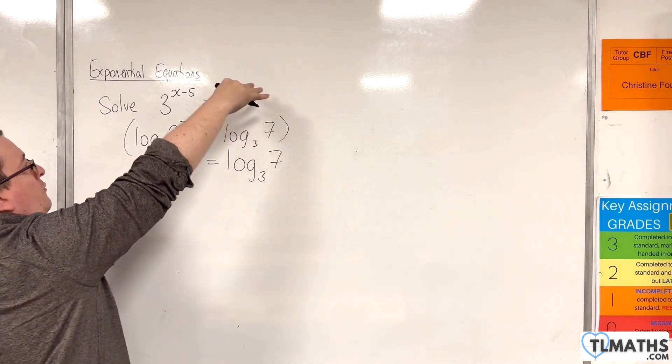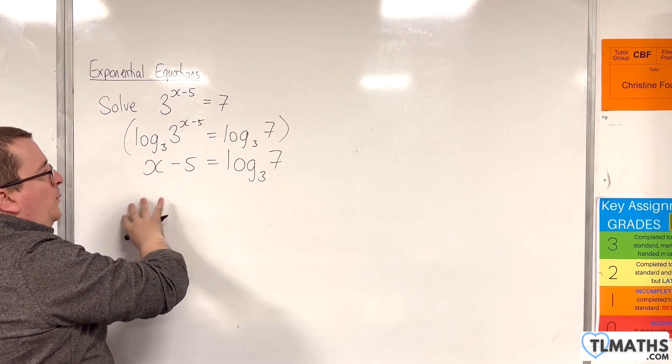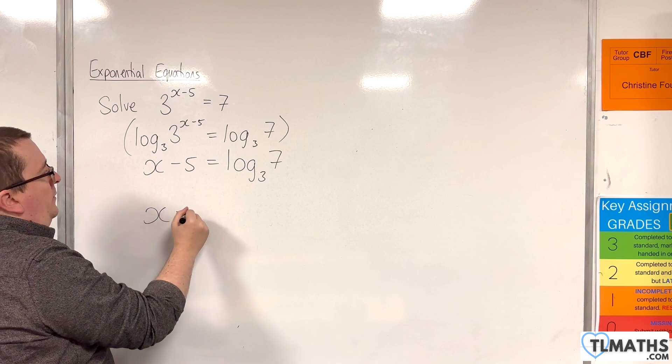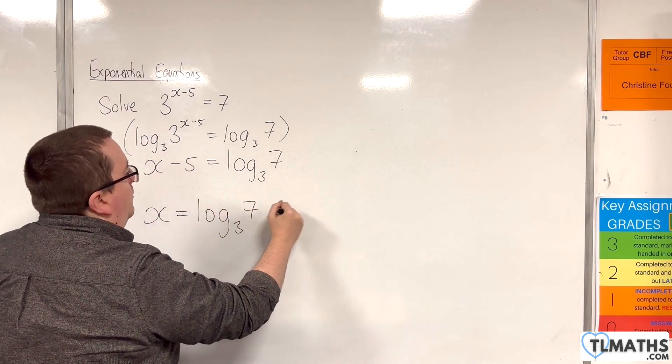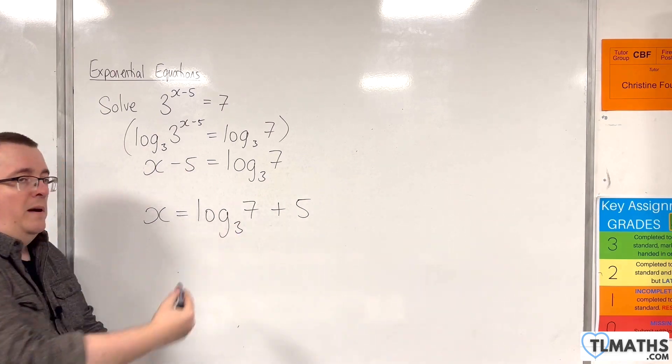Once you're at that stage, having gone from exponential to logarithmic form, we can add 5 to both sides. So x equals log base 3 of 7 plus 5, and this is the answer.